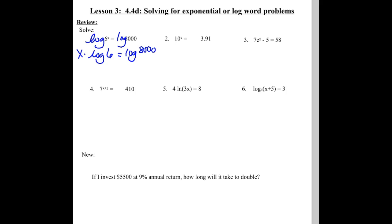Then we divide it out. So x equals the log of 8,000 divided by the log of 6. Grab your calculators — we're using common log here. Remember to close off the parentheses on log of 8,000 before you divide by log of 6. I'm getting 5.019.